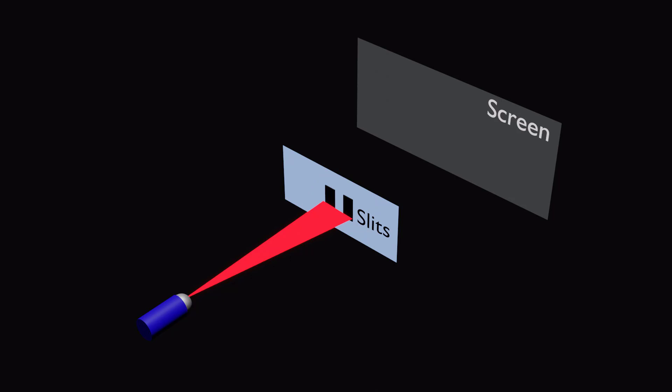On the other side of the barrier, a screen or detector is placed to record the arrival of the light. If light were simply made up of particles, we would expect to see two distinct patterns on the screen.